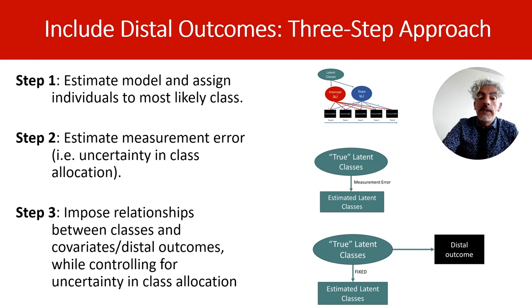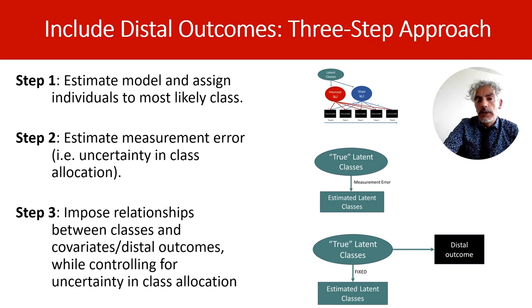This approach can be very helpful when you want to separate the step of developing the latent class model from looking at associations between the latent classes and distal outcomes or covariates. However, this approach is not adequate if covariates have direct effects on the measurement parameters.